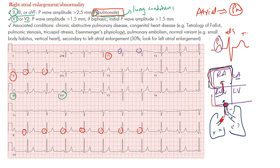It could also be a normal variant — for example, if someone has a small body habitus with a vertically positioned heart. Additionally, at least 30% of cases are actually secondary to left atrial enlargement: the left atrium enlarges, causes back pressure on the lungs, which backs up into the right side of the heart. So when you see right atrial enlargement, also look for left atrial enlargement.